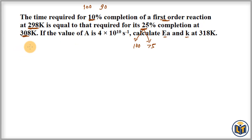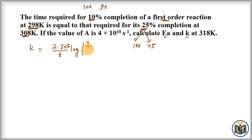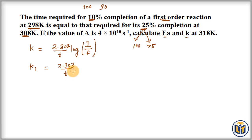The formula for a first order reaction is: K = (2.303 / t) × log(initial amount / final amount). At the initial temperature T1, the rate constant is K1, so we write: K1 = (2.303 / t) × log(100 / 90).